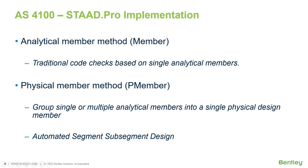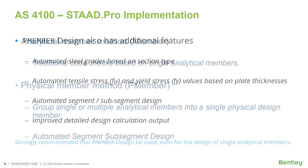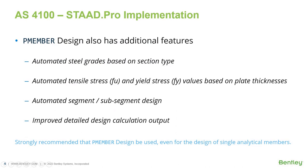The physical member method allows for automated segment and sub-segment design according to the code. It also has additional features like automated steel grades based on section type, automated tensile stress and yield stress values based on plate thicknesses, and improved detailed design calculation output. Thus, it is strongly recommended that PMember design be used even for design of single analytical members when it comes to the Australian Steel Design Code.